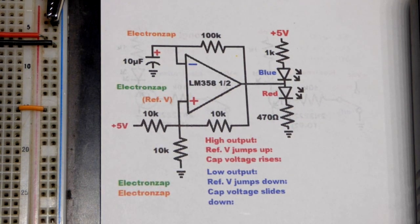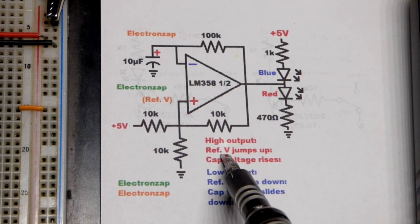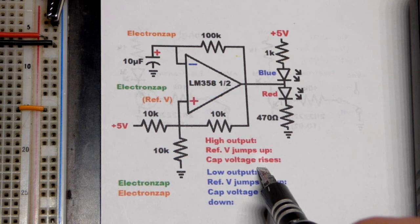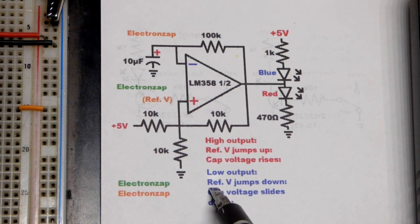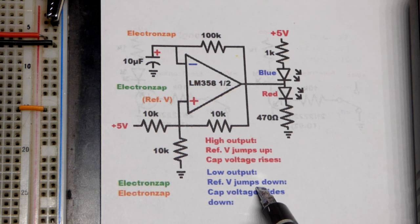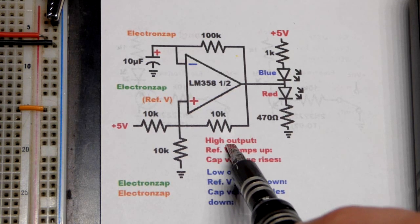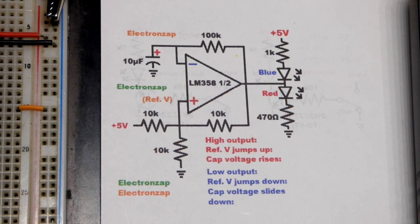That's the basics of this circuit. When the output is high, the reference voltage goes up. The capacitor starts charging. When it gets a high enough voltage, the output goes low, which drops the reference voltage down lower, which discharges the capacitor. Until it gets low enough, then it sets the output high. It just keeps going back and forth like that.